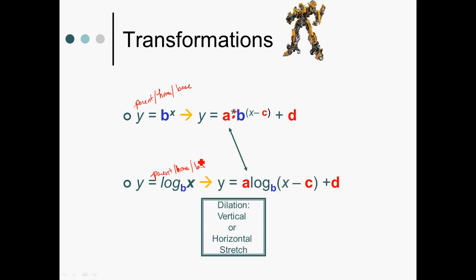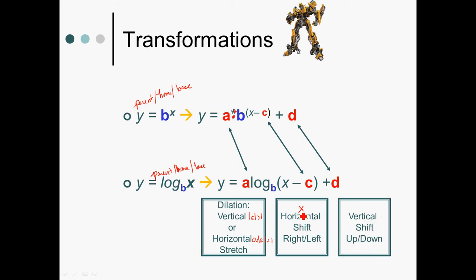The dilation factor is a vertical or horizontal stretch. And you know that it's vertical when the absolute value of a is greater than one, and horizontal when the absolute value of a is between zero and one. Think your parabola, two x squared versus a half x squared. Inside x, domain, is a horizontal shift right or left. And then adding or subtracting after the exponentiation, logging, and dilation factor is a vertical shift up and down.